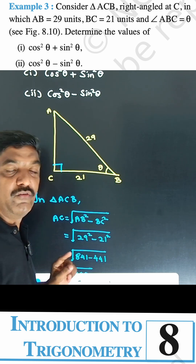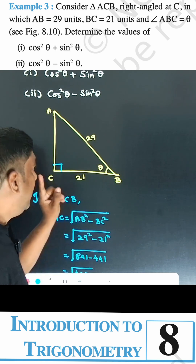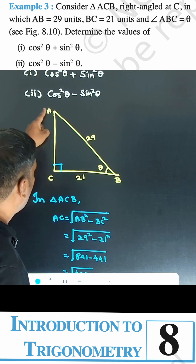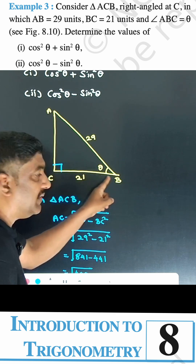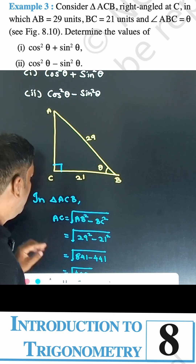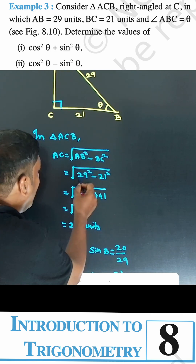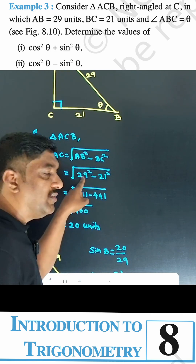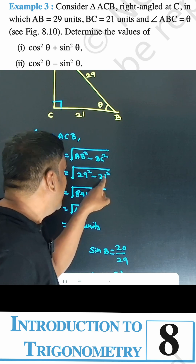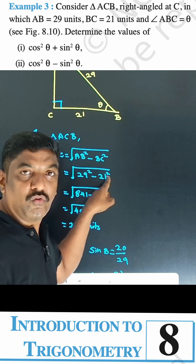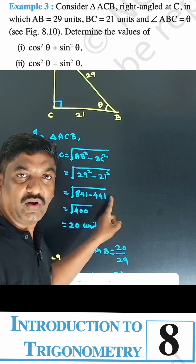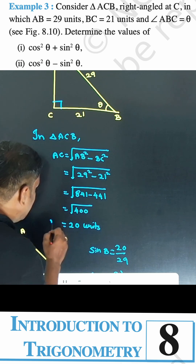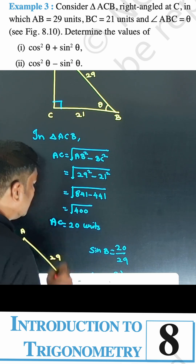By Pythagoras theorem, AC is equal to root of AB squared minus BC squared. AB squared is 29 squared, BC squared is 21 squared. 29 squared is 841, 21 squared is 441. 841 minus 441 is 400, so AC is equal to root of 400, which is 20 units.